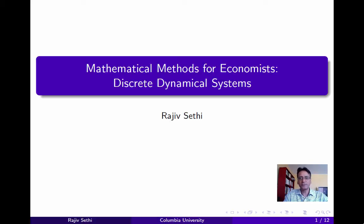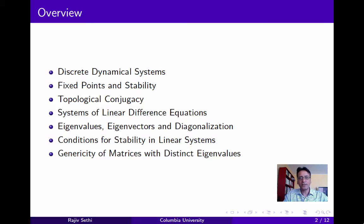In the last segment, we reviewed some results from linear algebra, and we'll put these to use now as we discuss discrete dynamical systems. We'll start by defining dynamical systems, then discuss fixed points and stability, then the important concept of topological conjugacy, which allows us to deduce the properties of one system by looking at another, possibly simpler system.